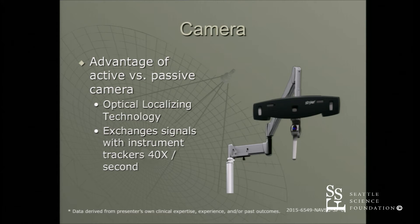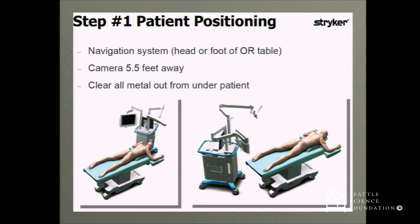In terms of the camera, there are advantages between the active versus the passive camera. With the active camera, there's optical localizing technology that exchanges signals with the trackers about 40 times per second, so you can take your navigated instrument and drag it along the skin and get real-time imaging. For room setup, you can position the camera at the foot or head of the bed. I prefer the camera at the foot, with a single C-arm positioned on the opposite side of where I'm working.